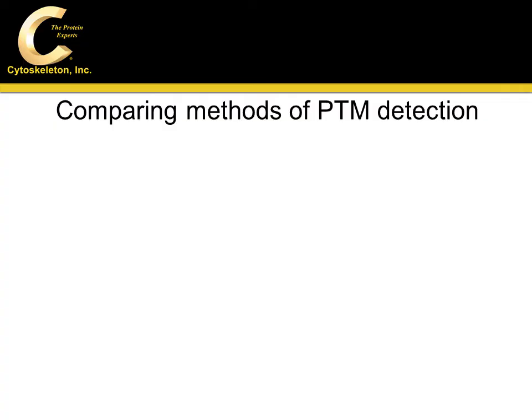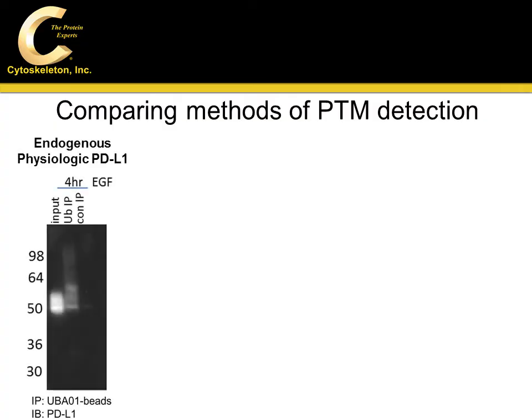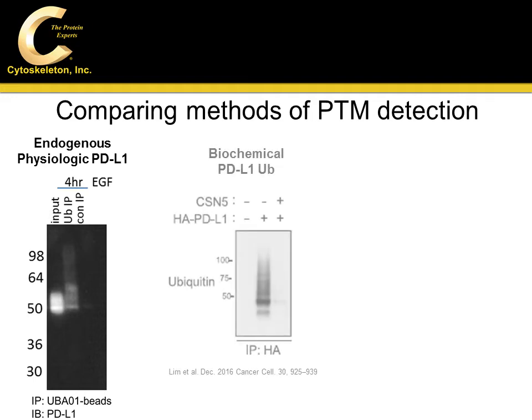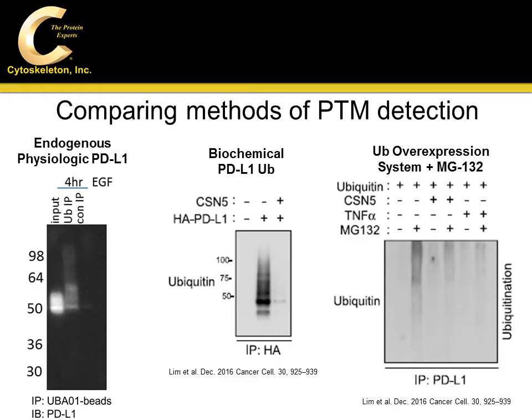Common approaches for studying PTM modifications include endogenous PTM immunoprecipitation, in vitro biochemical assays, and overexpression immunoprecipitation systems. The SignalSeeker kit is the most physiologically relevant assay, as it identifies endogenous PD-L1 ubiquitination, and in this scenario is validated by PD-L1 biochemical ubiquitination.